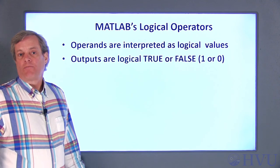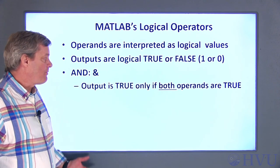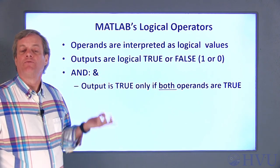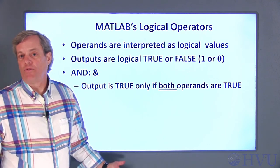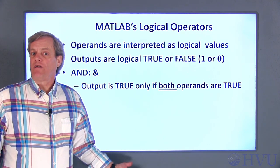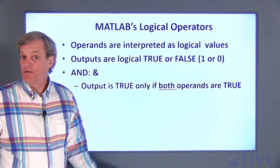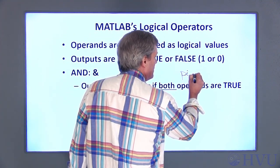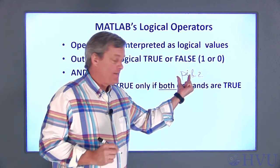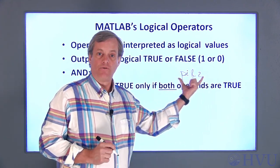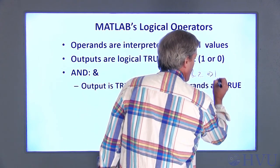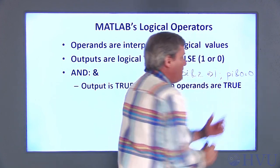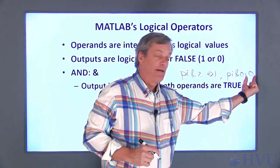There are three logical operators I'll use in this course. The first is a logical AND, implemented in MATLAB with an ampersand symbol &. The result of an AND operation is true only if both operands are true. If either or both operands are false, the result is false and MATLAB returns a 0. For example, pi & 2 — both are non-zero, so both are true, and the result is a 1. But pi & 0 — since one operand is false, the result is 0.